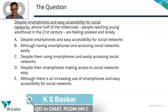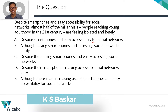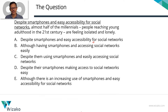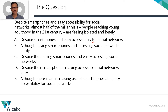Despite smartphones and easy accessibility for social networks — note the phrase 'accessibility for social networks.' Are we getting accessibility to something, or giving accessibility for someone? Accessibility can come with either 'for' or 'to,' conveying two different meanings. When you're giving access to something — like giving access to the social network, to better water, to better education — it should come with 'to.'